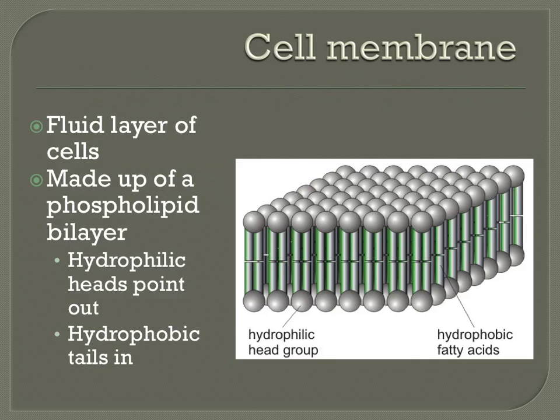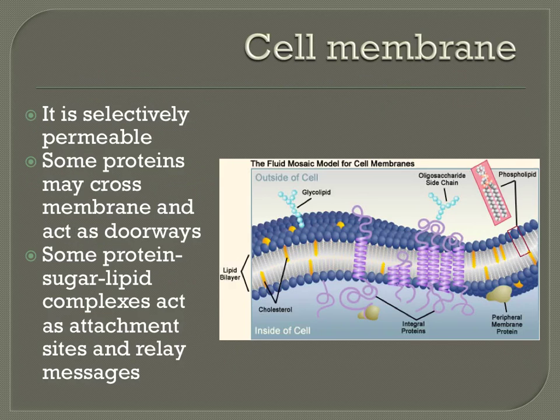The cell membrane is arranged so that the hydrophilic, or water-loving, heads face towards the inside and the outside of the cell where there's lots of water, and the hydrophobic tails face in towards each other so that they don't come in contact with water. The cell membrane provides a tremendous number of important functions for the cell. One of the most important involves its selective permeability.